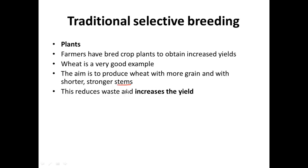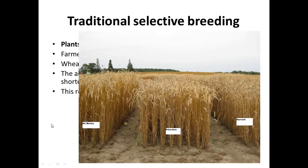Shorter stems mean less waste going into the stem itself, less energy from the plant, and they're less likely to get blown over in the wind — a shorter stem is a stronger stem. Here's an example of a breeding program from the Canadian Food Authority showing wheat plants of different stem lengths. Of course there are other characteristics you'd be interested in, such as how much grain there is per plant and ultimately how much grain you can produce per hectare of field.